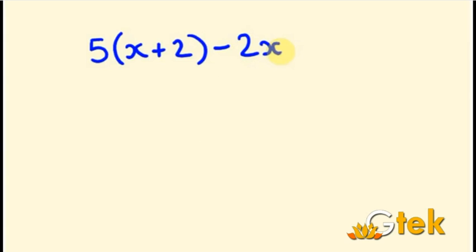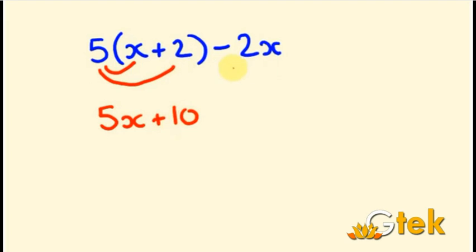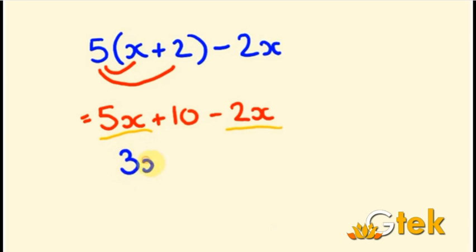We will see another example. 5 open bracket x plus 2, plus bracket minus 2x. So 5 into x is 5x, and the sign is plus, so plus 5 into 2 is 10, and minus 2x. Now I have two x coefficients: one is 5x and another one is 2x. So first I have to simplify these — 5x minus 2x is 3x. The remaining term is 10. So the answer is 3x plus 10.